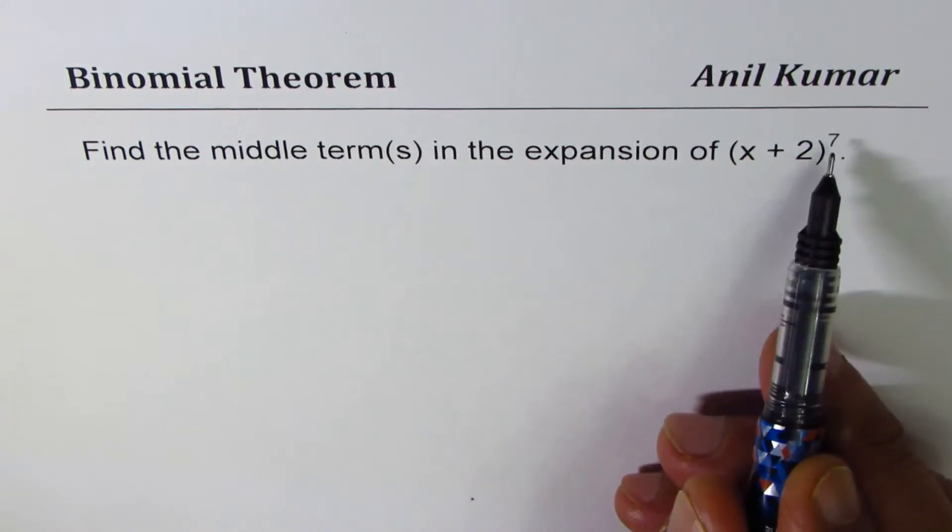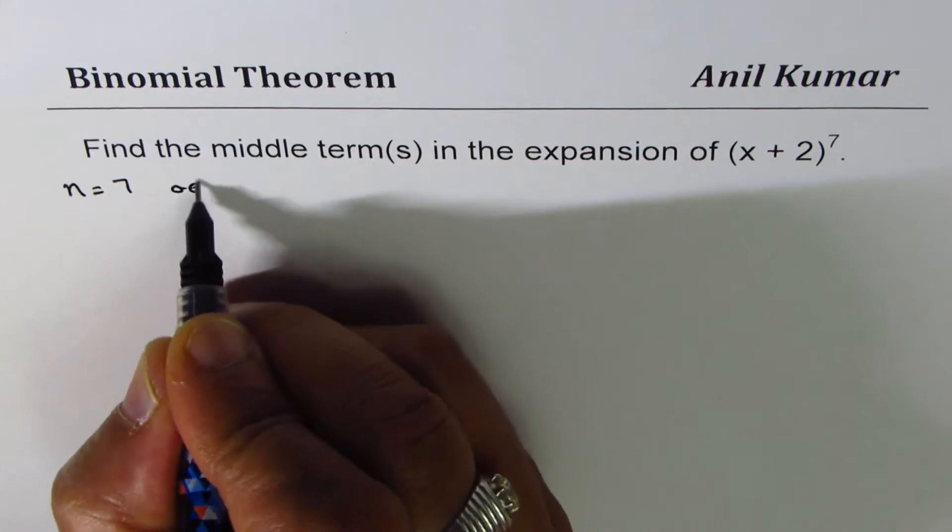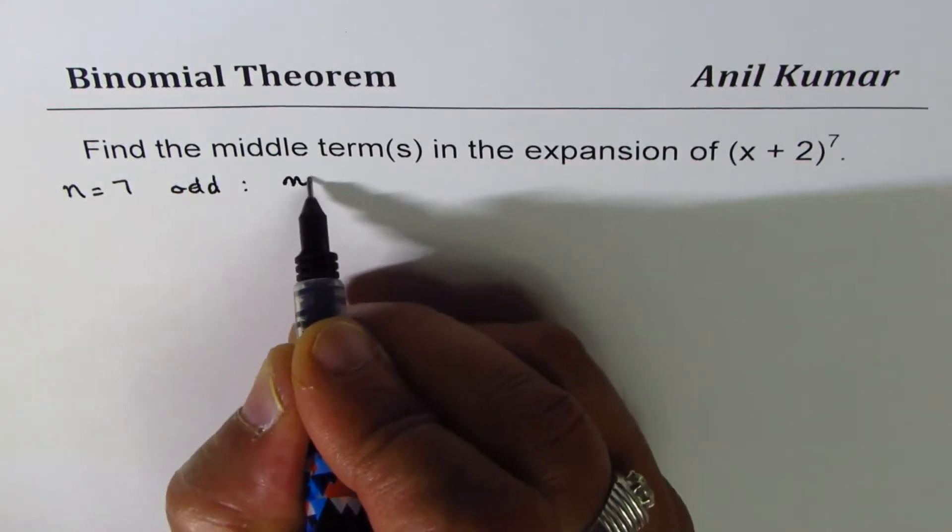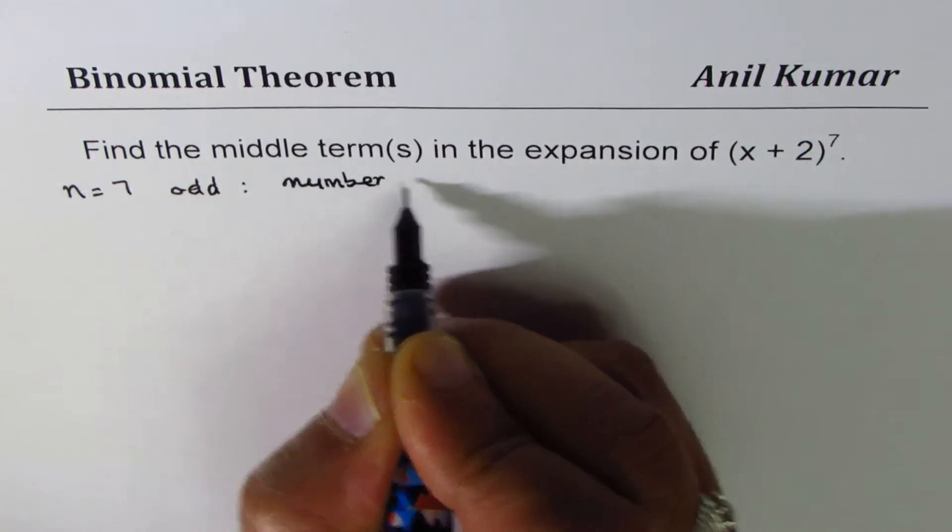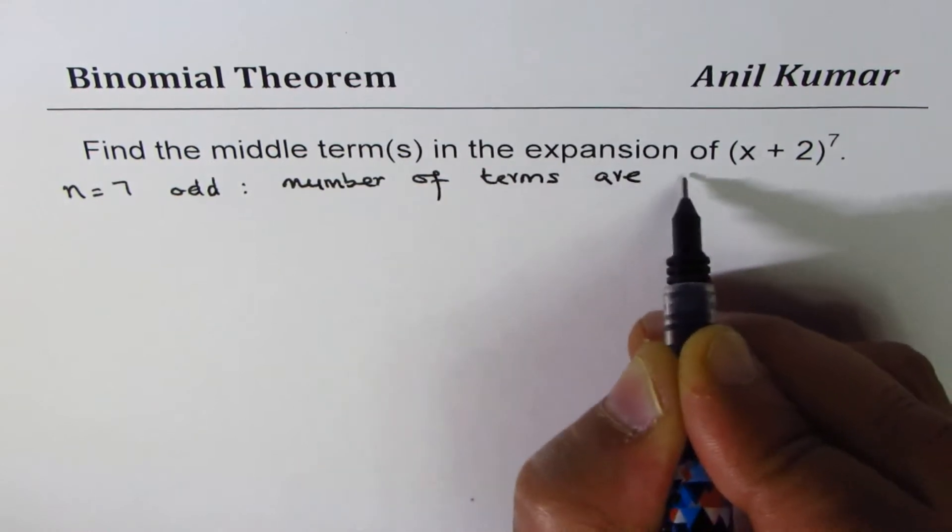Now here we have n equals 7, which is odd, so the number of terms will be 8.